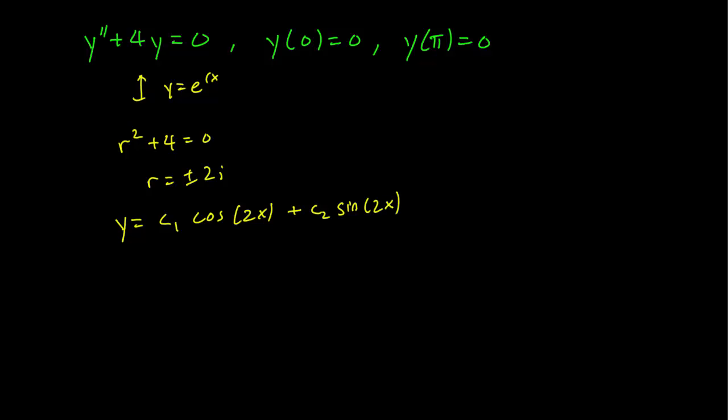We can then plug in the initial conditions and see what happens. So y(0) = 0 implies that 0 equals c₁, since cosine of 0 is 1 and sine of 0 is 0. And plugging in pi, y(π) = 0 also gives us 0 equals c₁. That's the only equation we get.